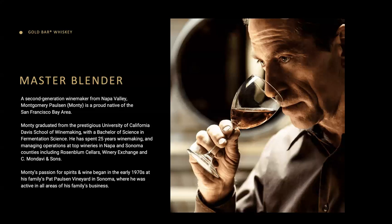Our master blender is Montgomery Paulson, a second-generation winemaker. His father Pat Paulson owns several wineries in Napa Valley. Monty spent time at UC Berkeley and many years in the wine industry before transitioning to whiskey. What sets our whiskeys apart is the secondary aging process — we age all our whiskeys in a second barrel: former red wine barrels from Napa Valley. This smooths out the product, adds sweetness, and gives it a distinct flavor.